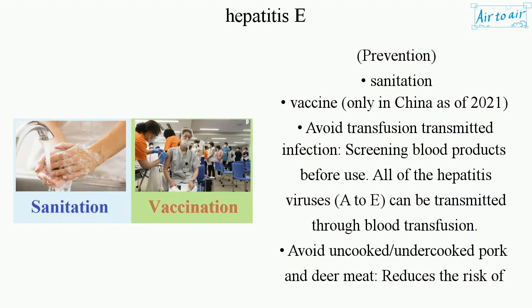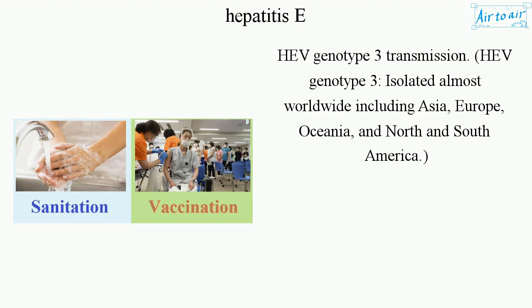Prevention includes sanitation and a vaccine, available only in China as of 2021. To avoid transfusion-transmitted infection, blood products should be screened before use. All hepatitis viruses A to E can be transmitted through blood transfusion. Avoiding uncooked or undercooked pork and deer meat reduces the risk of HEV genotype 3 transmission, which is isolated almost worldwide including Asia, Europe, Oceania, and North and South America.